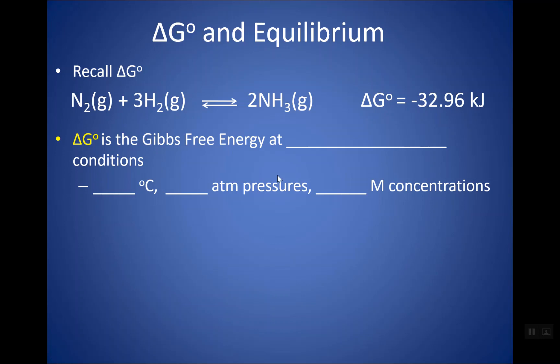So if you remember, for any reaction we can calculate — or they can give you — a delta G, which is the Gibbs free energy. A lot of times you might see this little degree sign next to it. That degree sign stands for standard state conditions, because typically if we're performing a lab, those are the conditions that we're going to be performing it under.